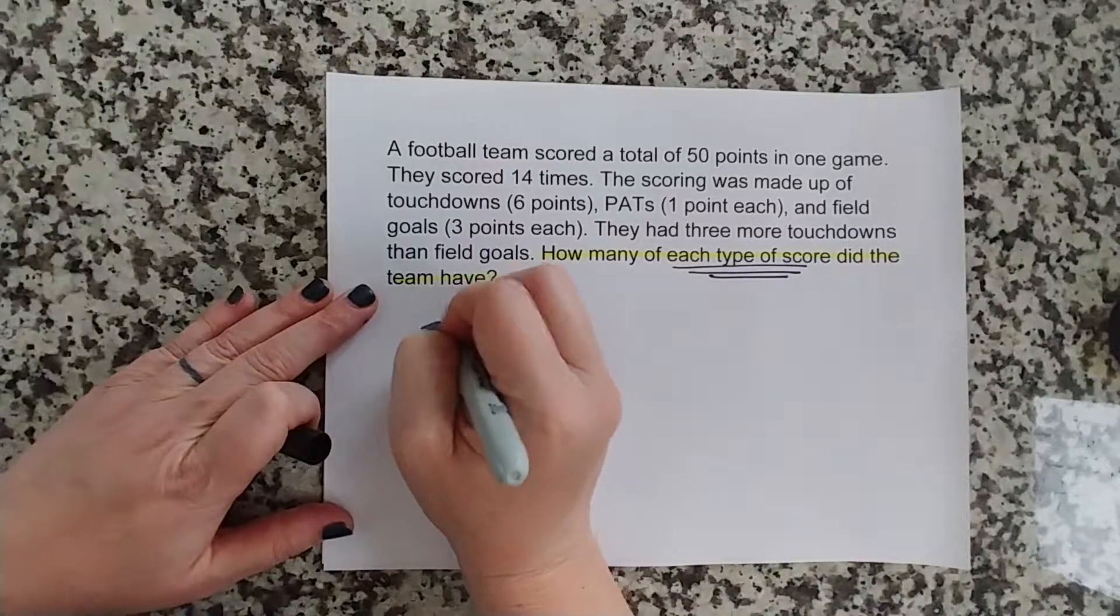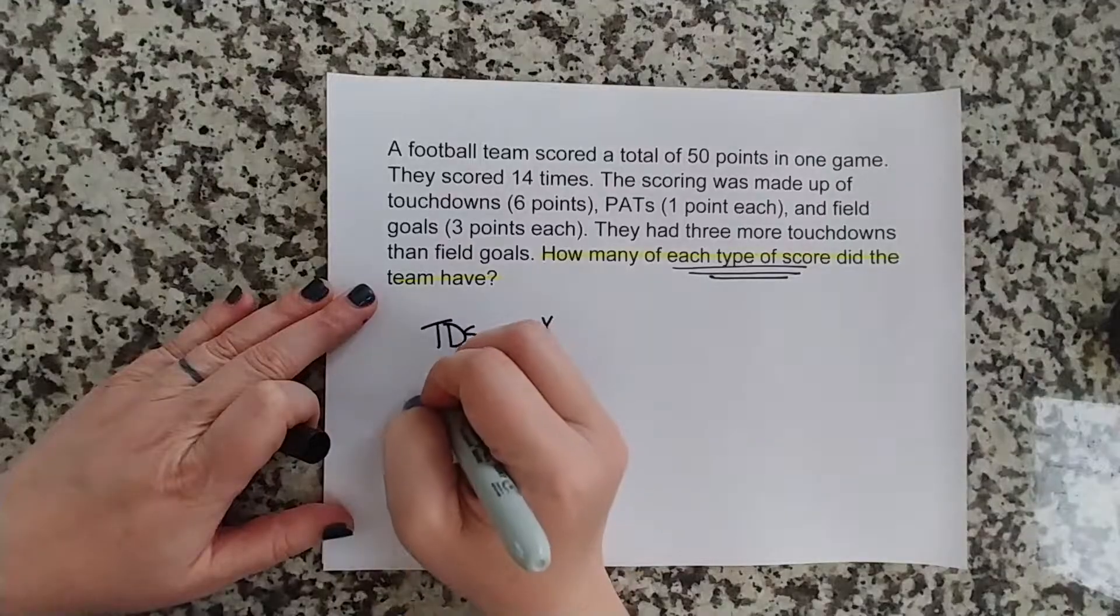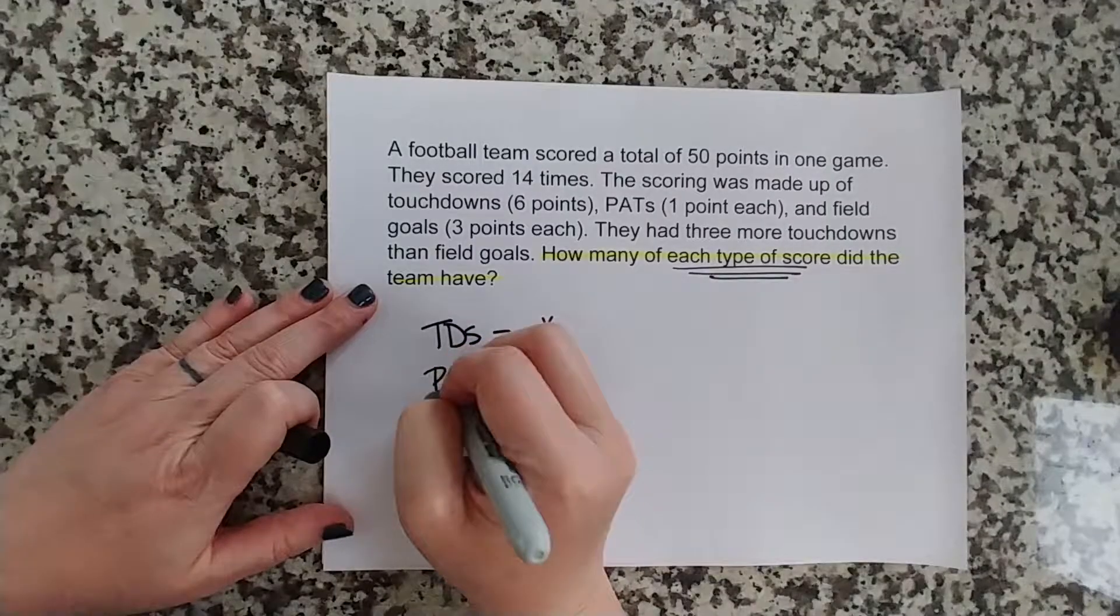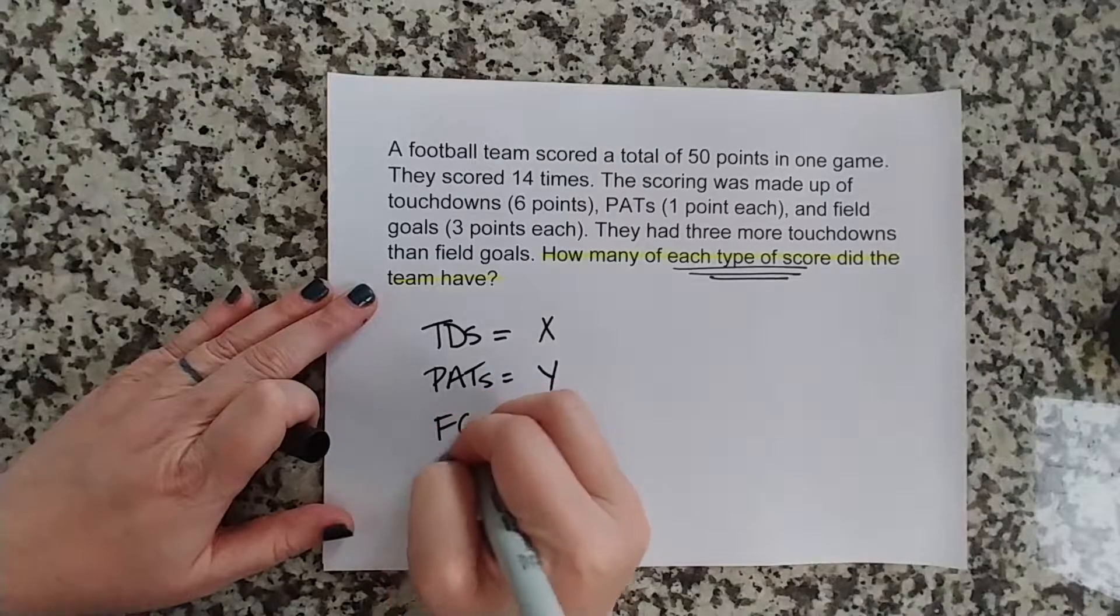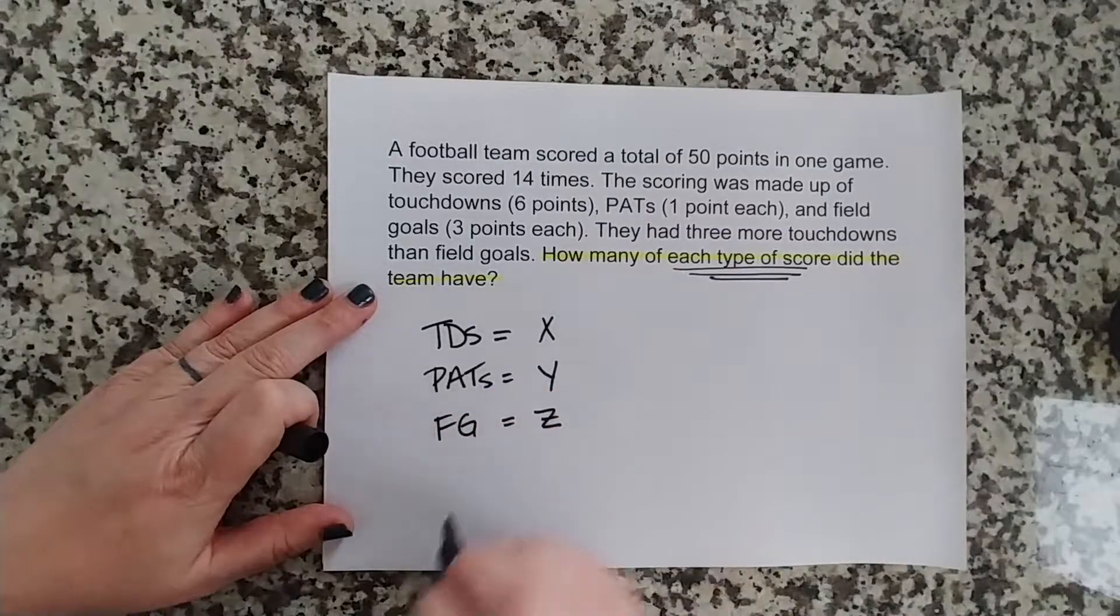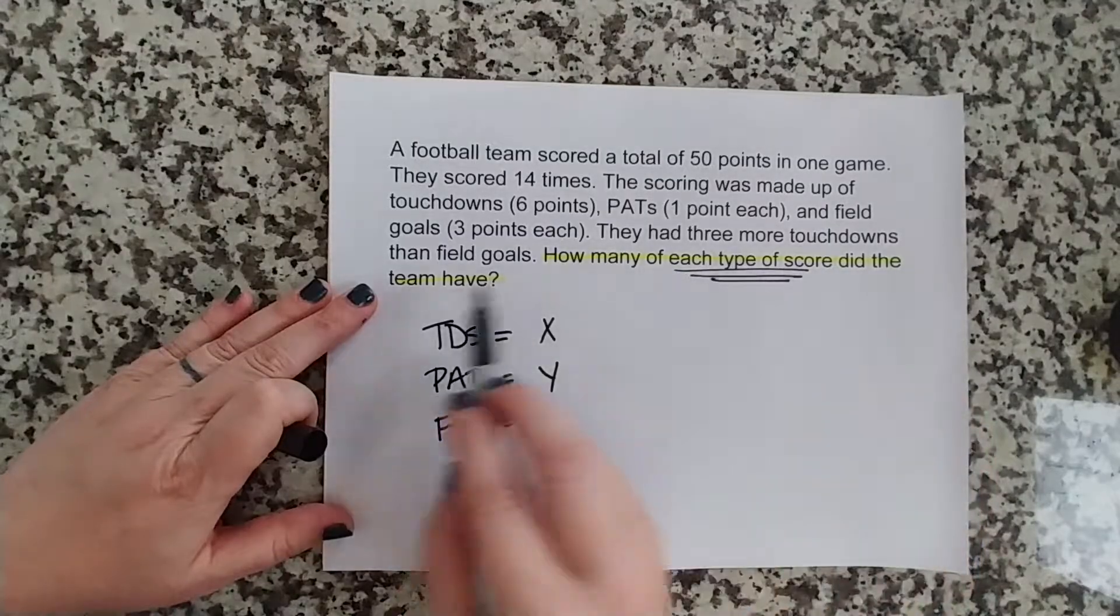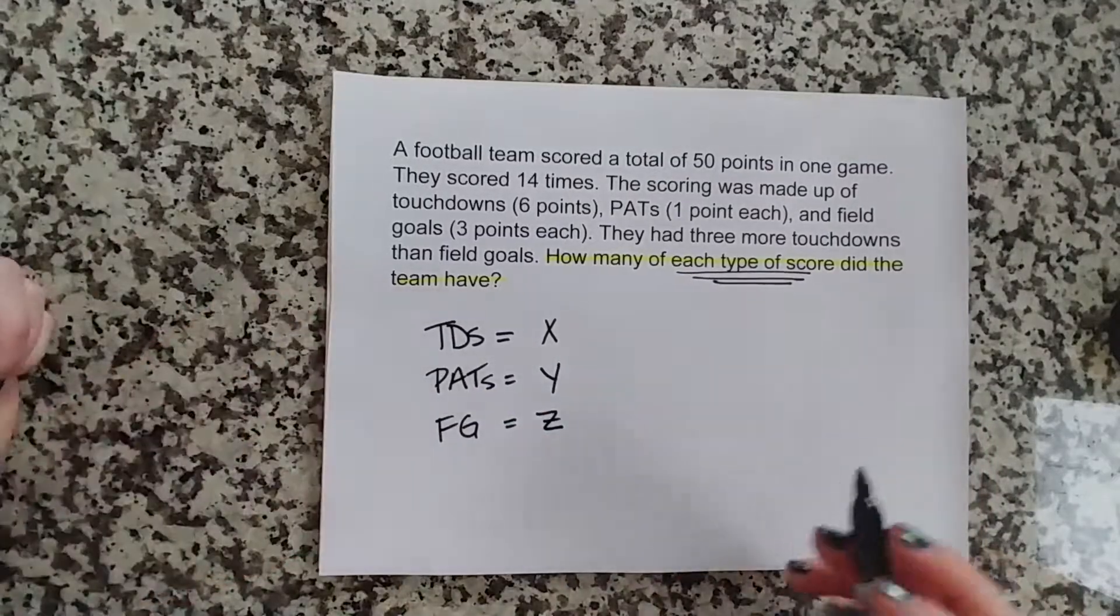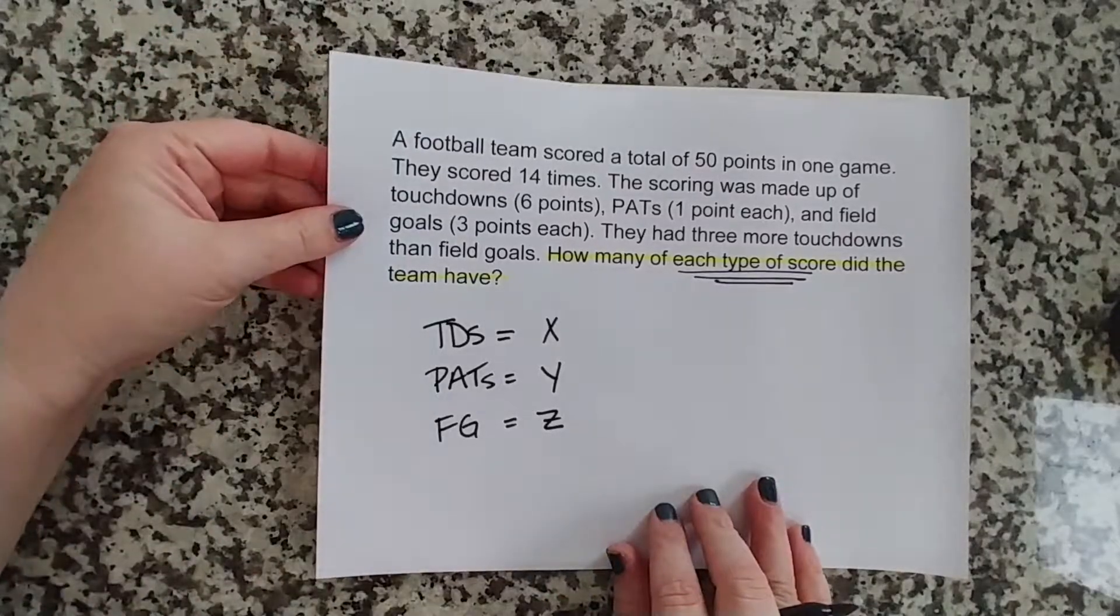Okay, so then if we want to know how many of each type of score, each type of score is going to be our variables. And there are 3 types of scores. There were touchdowns, so we're going to let that be X. There were point after touchdowns, so we're going to say PATs, we're going to let that equal Y. And there were field goals, and we're going to let that equal Z. So there are 3 unknowns, there are 3 variables, and you'll always find that in the last sentence where it's actually asking you what you're going to find for this.